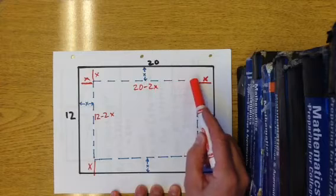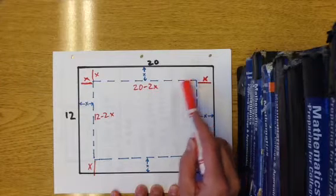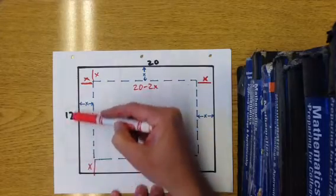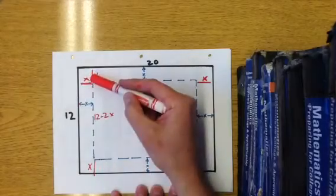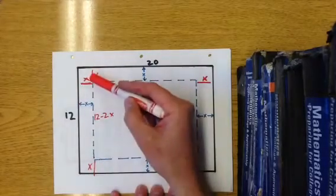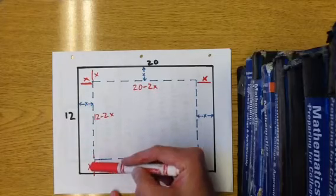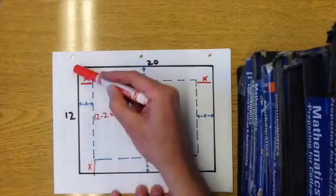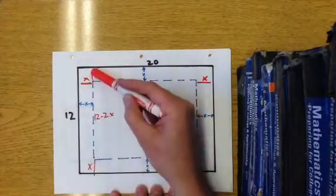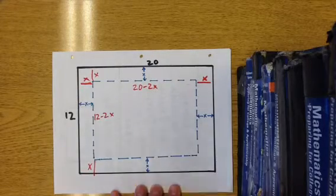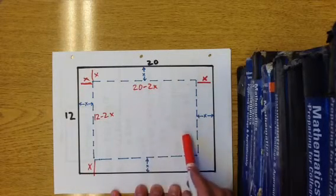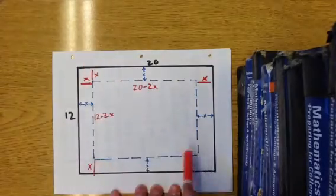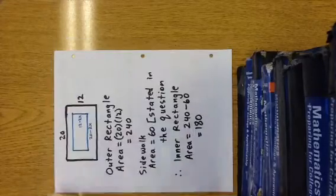We see that this dotted line on the inside, this blue one, has a length of 20 minus 2x. How about the other way? This is 12, but he's cutting out a sidewalk of uniform width. He's cutting a piece of x units long and x units long off of each side. So this dotted blue line will be 12 minus 2x. This interior piece is 20 minus 2x times 12 minus 2x, and this outer piece is 20 times 12.